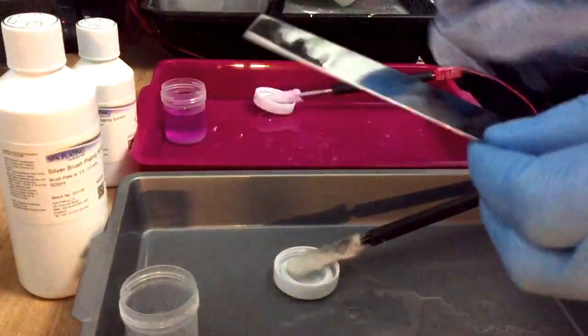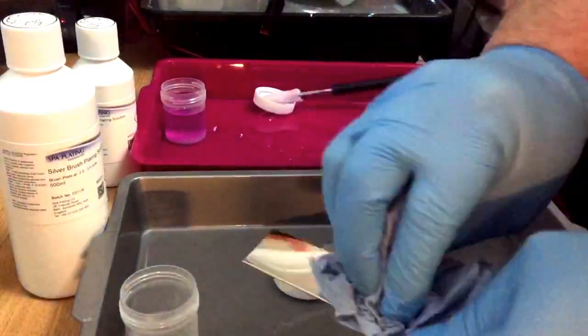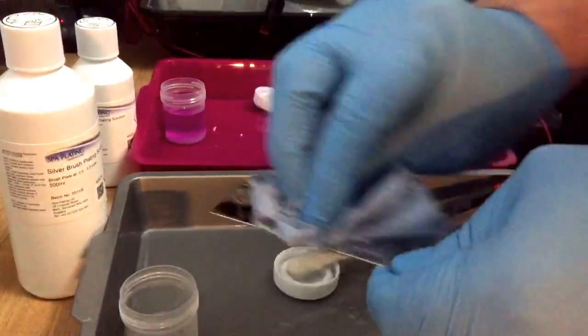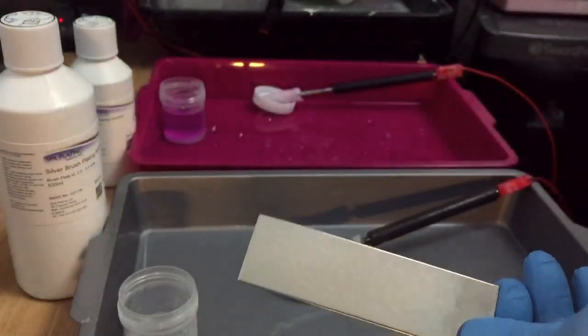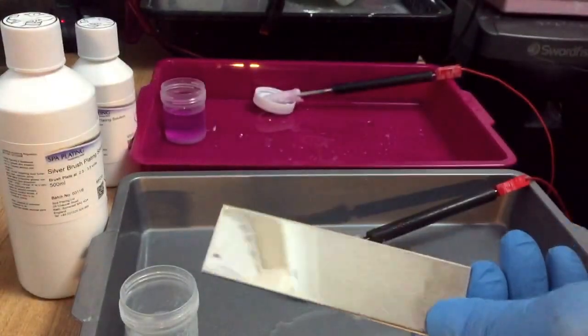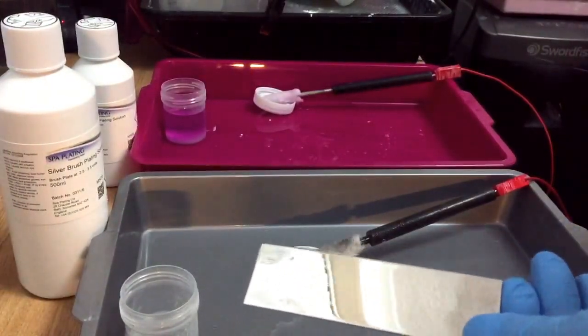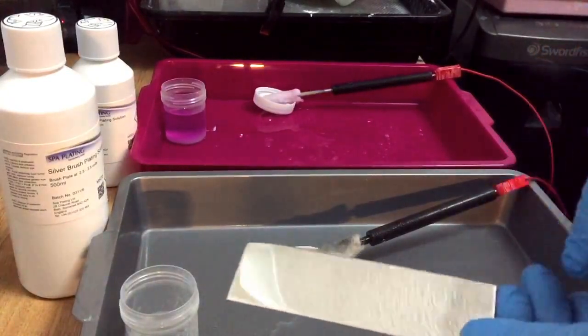Basically you can, if there's any imperfection on the plating or so, which normally there isn't, there's perfect. The plating is always perfect if you do it right. It's always to the item where you plate it on.